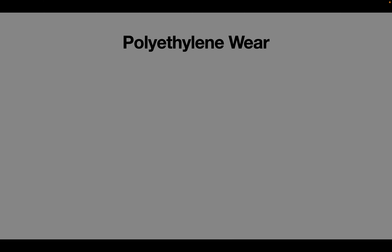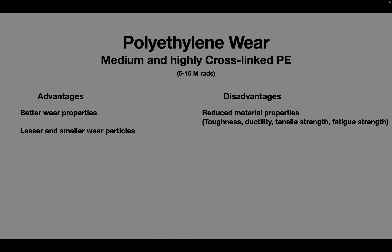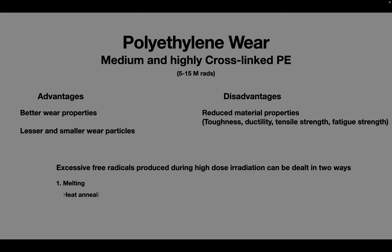Since polyethylene sterilization by irradiation exhibited these properties, a concept of medium and highly cross-linked polyethylene was conceived. The main advantages were better wear properties and fewer and smaller wear particles. However, the main disadvantages are reduction in material properties like toughness, ductility, tensile strength, and fatigue strength. It also produces excessive free radicals and makes polyethylene more susceptible to oxidation and chain scission. To overcome this problem, highly irradiated polyethylene can be treated by melting or heat annealing.